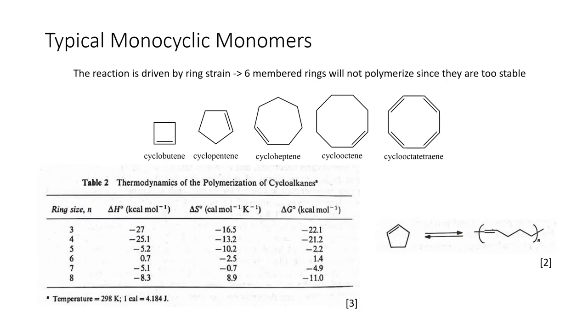So as noted earlier, this polymerization process is driven by ring strain. So we've got some example monocyclic monomers. They each have their double bonds in them, so we have our cyclic alkenes. And you can see that for small rings and large rings, the change in Gibbs free energy of polymerization is negative, meaning we can get that to happen at room temperature. However, for six-membered rings, we don't see a favorable reaction. We can't get this reaction to happen. So the stability of six-membered rings prevents ROMP of six-membered rings.